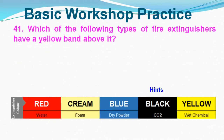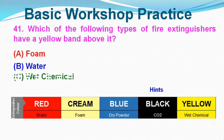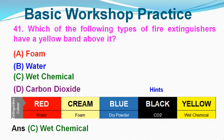Question No. 41: Which of the following types of fire extinguisher has a yellow band above it? Option A: Foam, Option B: Water, Option C: Wet Chemical, Option D: Carbon Dioxide. Correct answer is Option C, Wet Chemical.